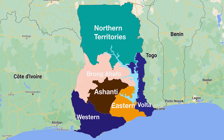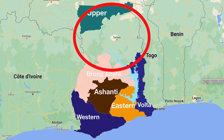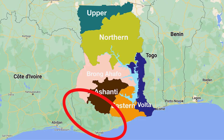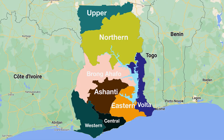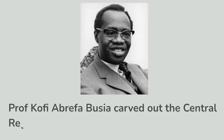The new region was created with its own House of Chiefs. In 1960, the Upper region was created out of the Northern region and became the seventh region of the country. The next big move was the carving of the Central region out of the Western region in 1970, by Professor Kofi Abrefa Busia, just before the population census of that year.